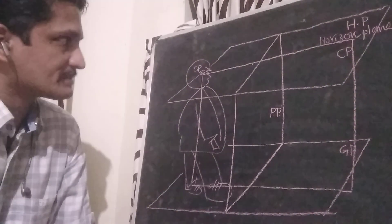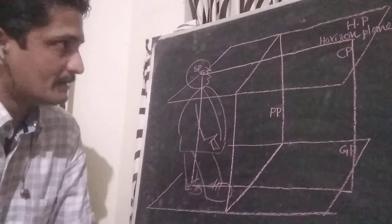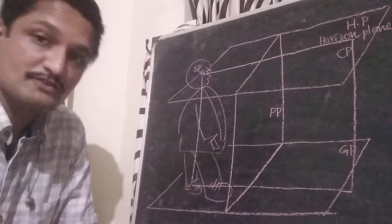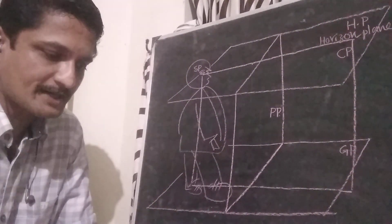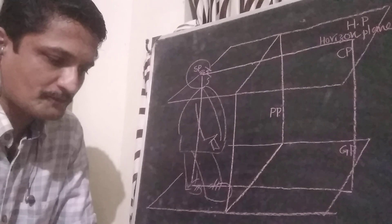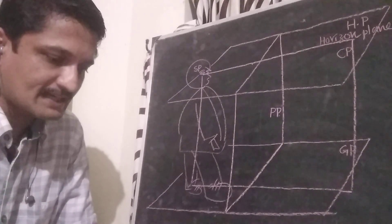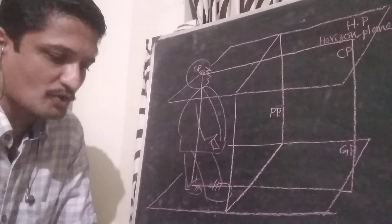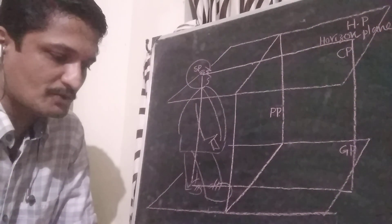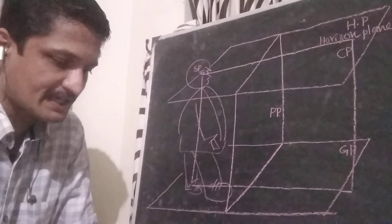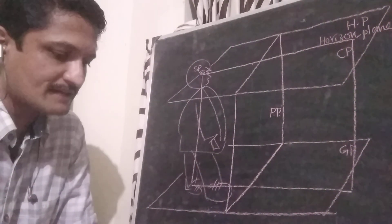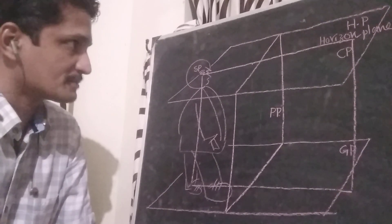Center of vision is the point through which the axis of vision pierces the picture plane. Axis of vision means it is the line drawn perpendicular to the picture plane and passing through the station point.